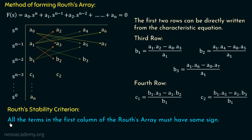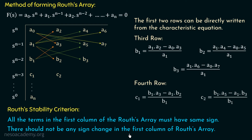The Routh stability criteria states that all the terms in the first column of the Routh array must have the same sign. The first column contains elements a₀, a₁, b₁, c₁, and so on down to aₙ. There should be no sign change in the first column. If all terms in the first column have the same sign, the system is stable.